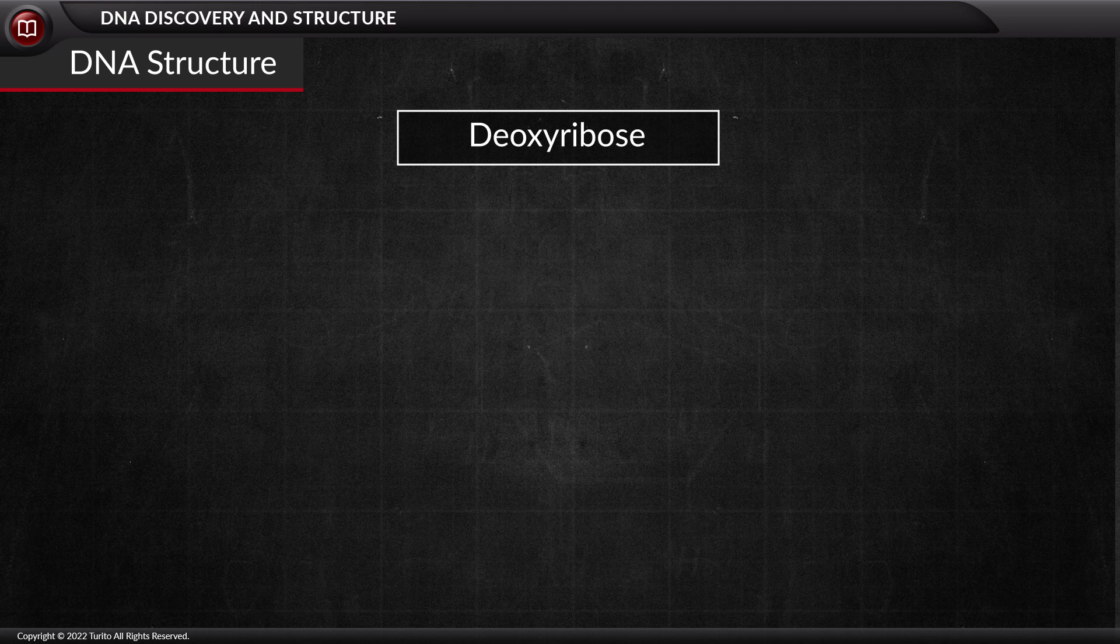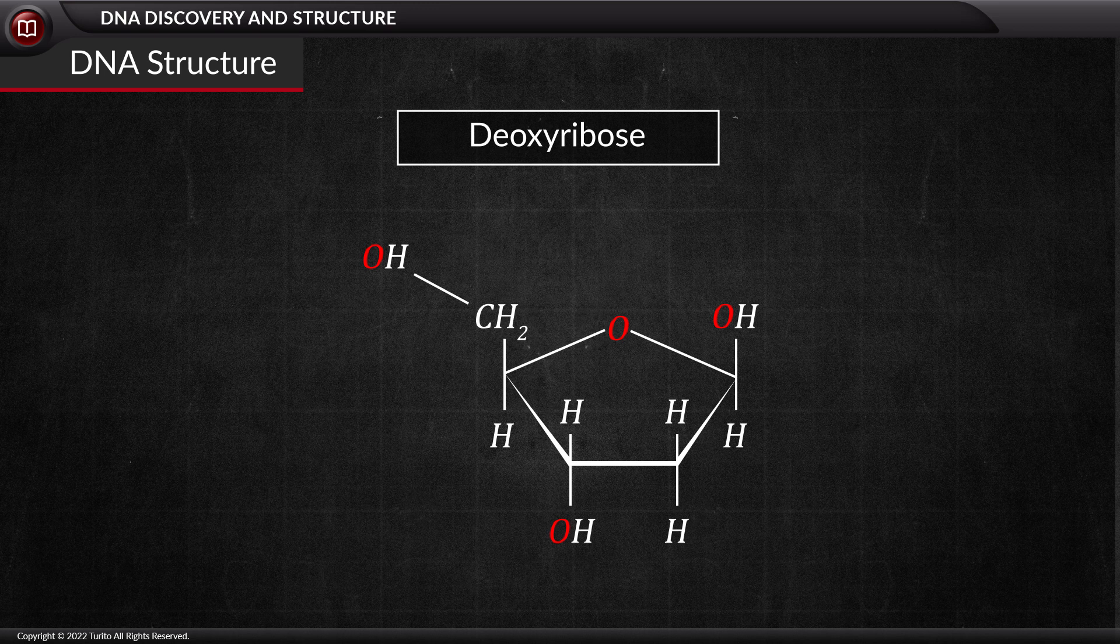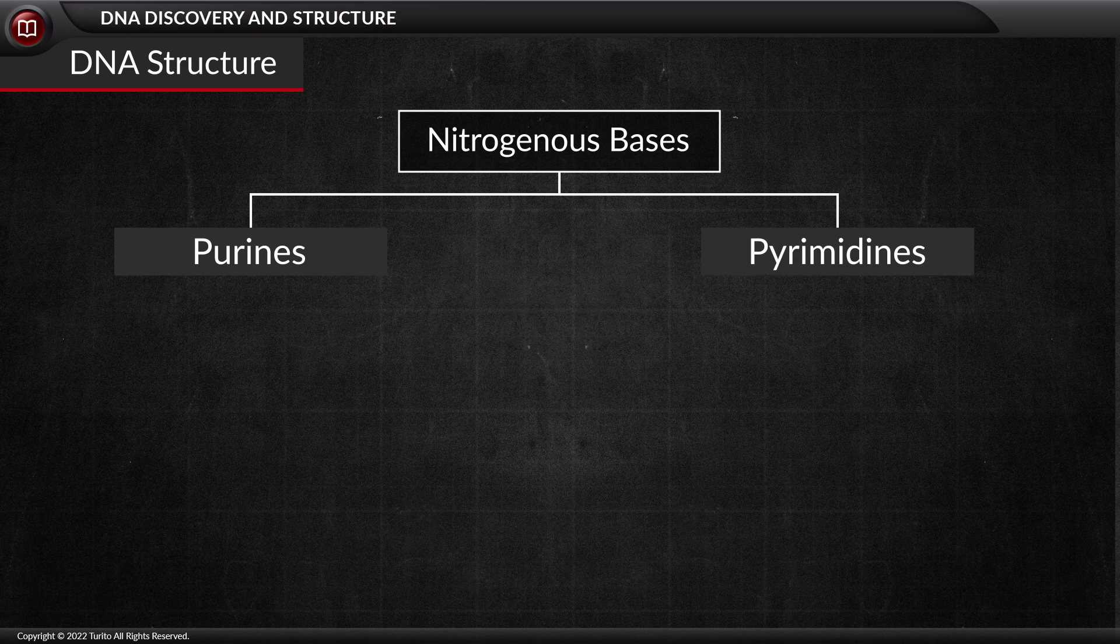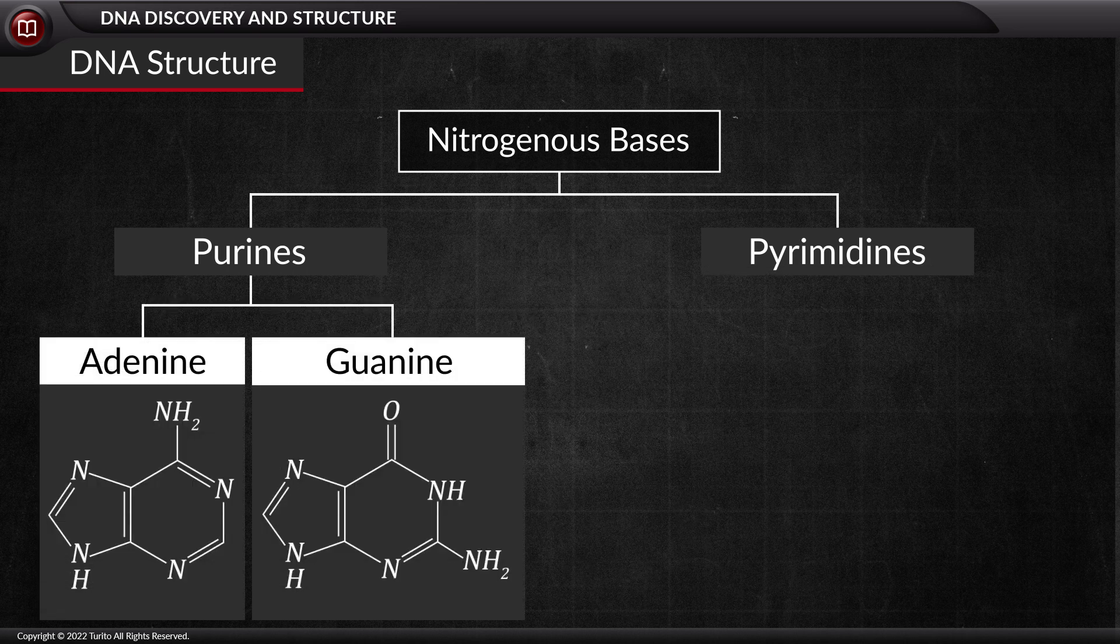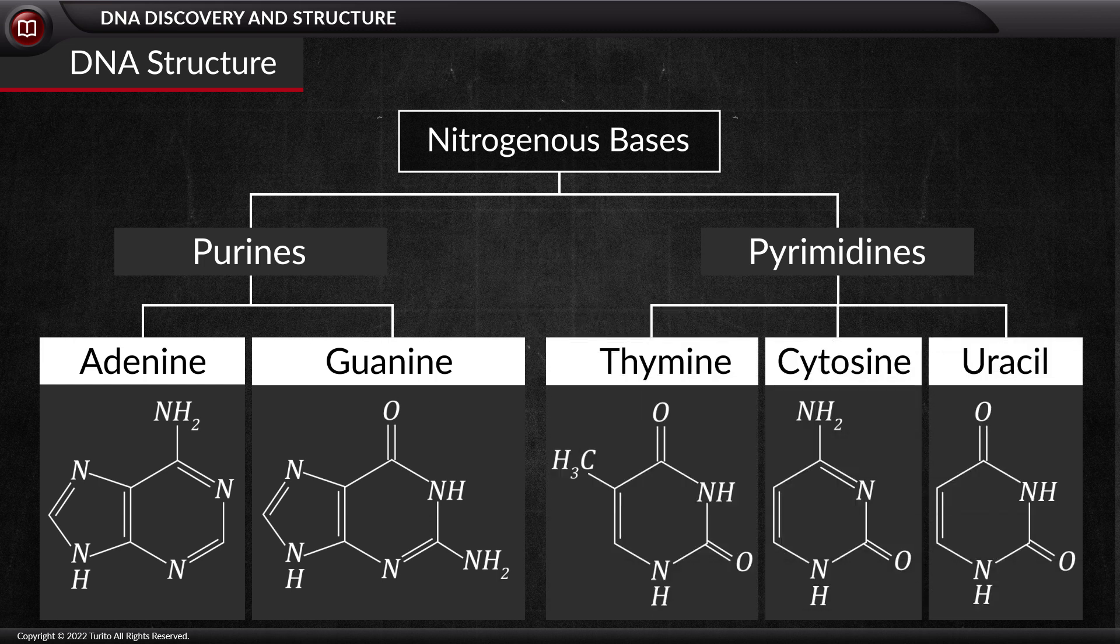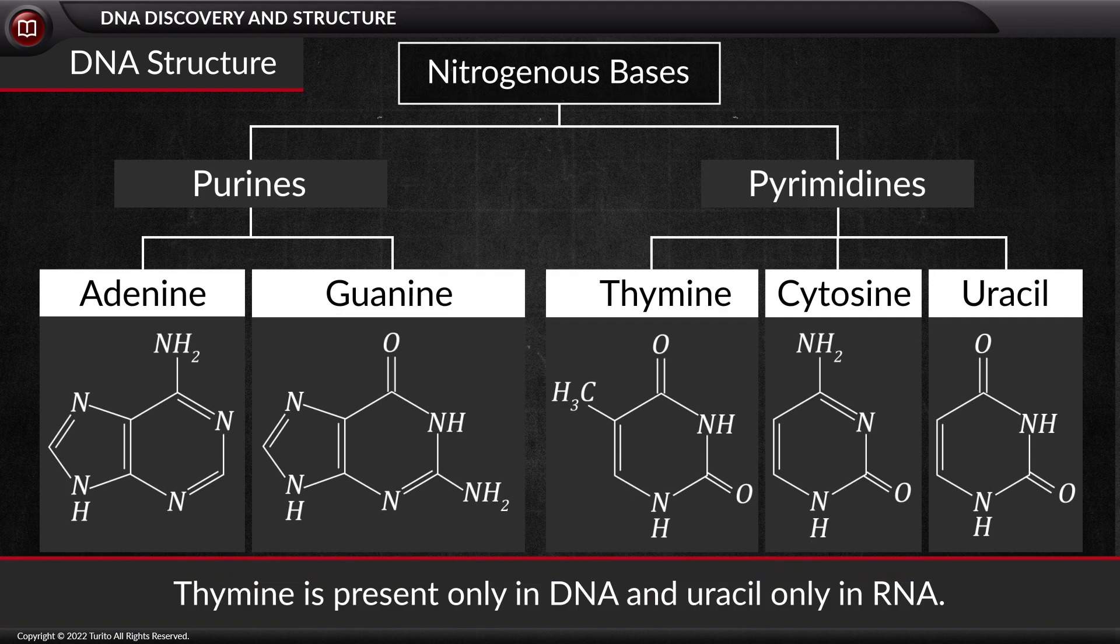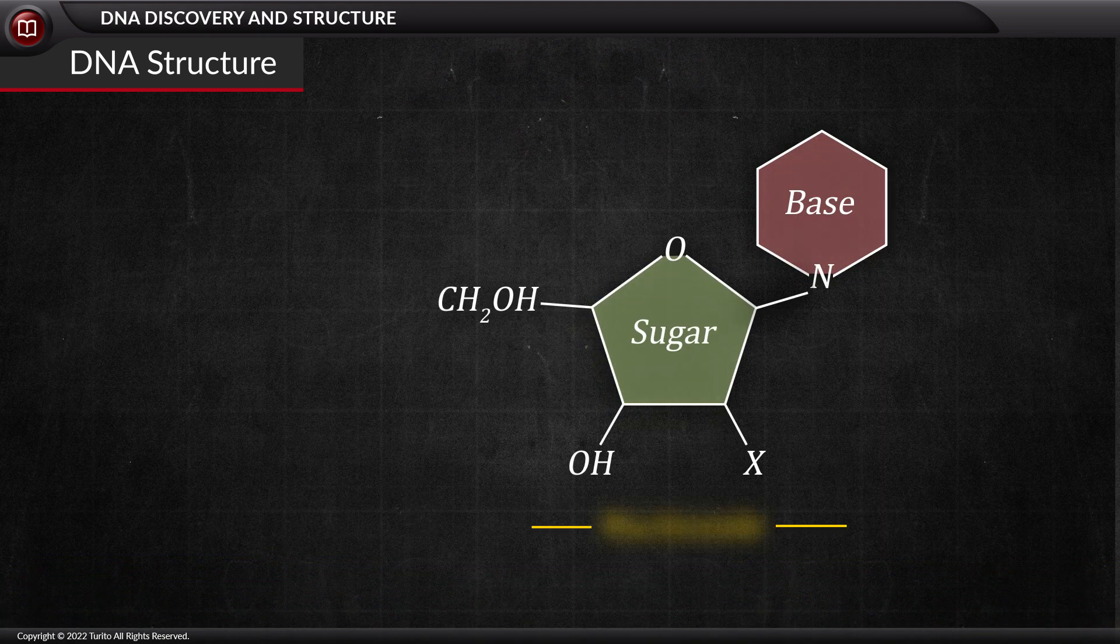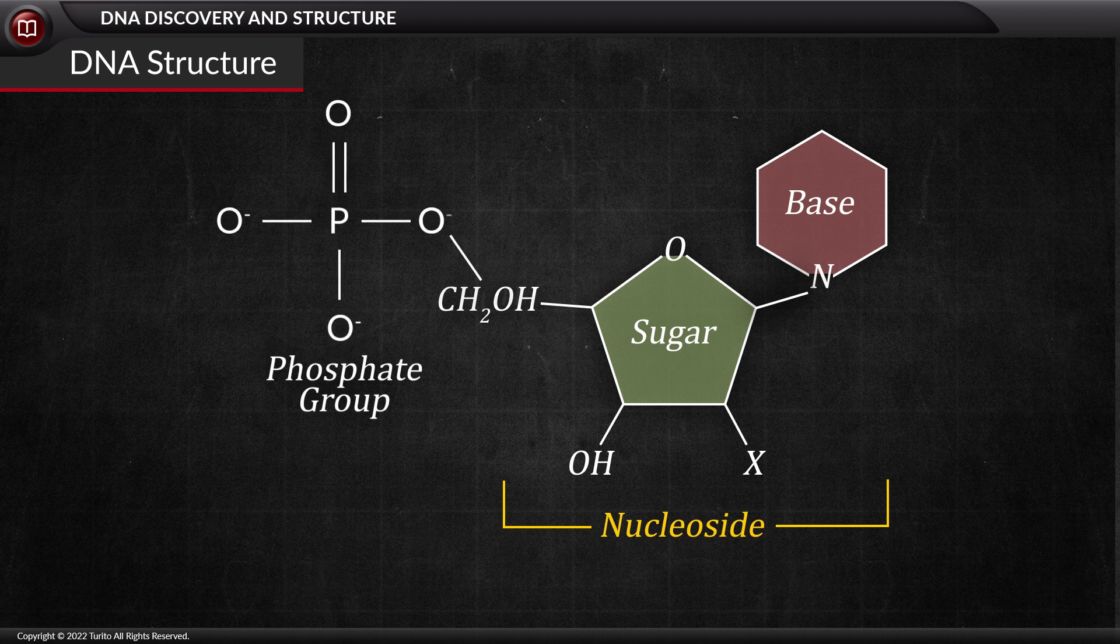Talking about nitrogenous bases, there are two types: purines and pyrimidines. Purines include adenine and guanine, whereas pyrimidines include thymine, cytosine, and uracil. Uracil replaces thymine in RNA. Initially, the nitrogenous base and the sugar combine to form a nucleoside, and a phosphate adds up to the nucleoside to form a nucleotide.